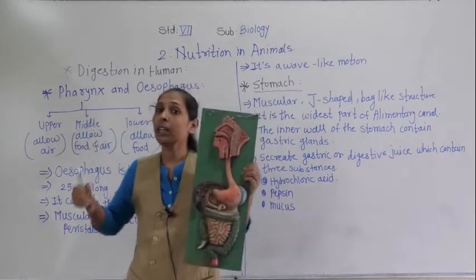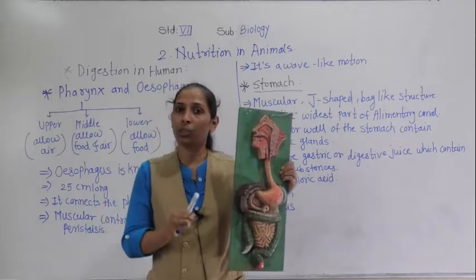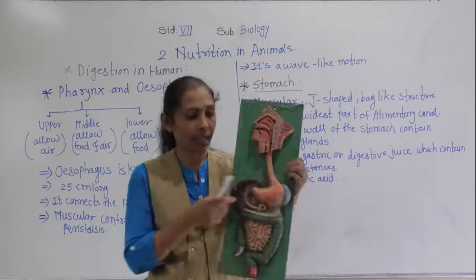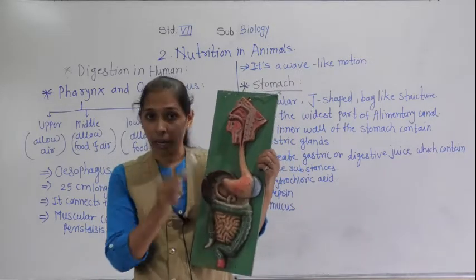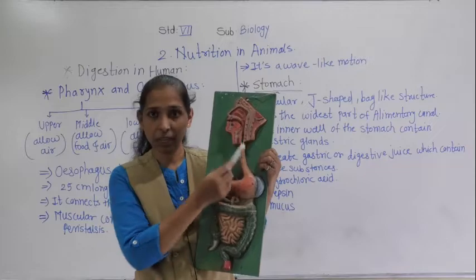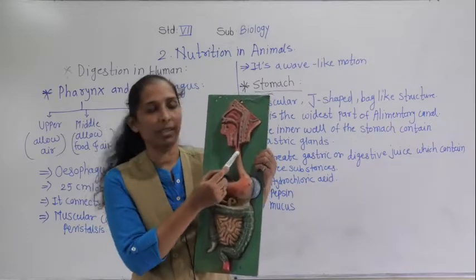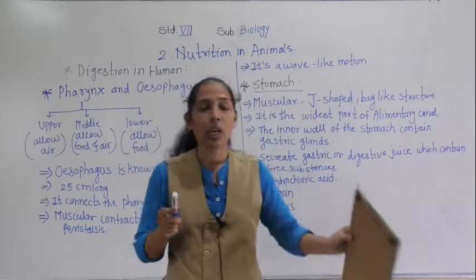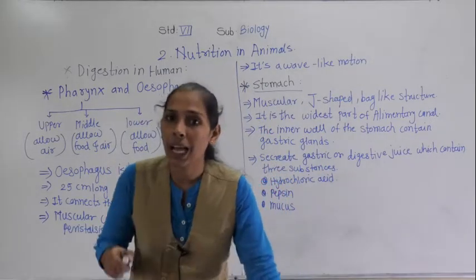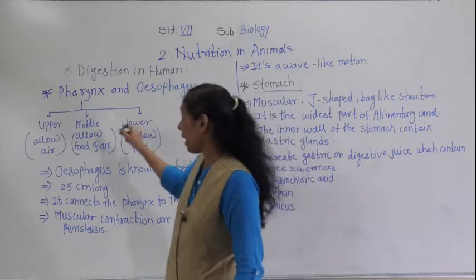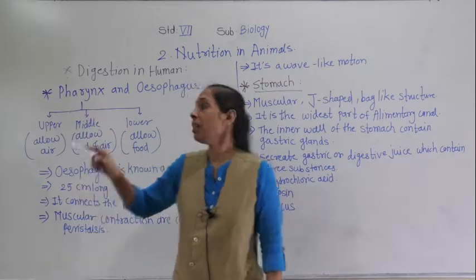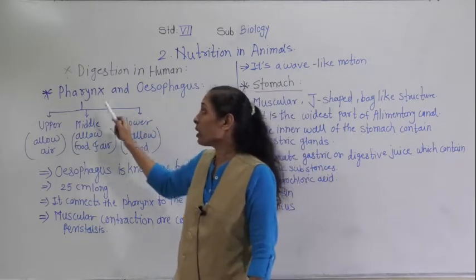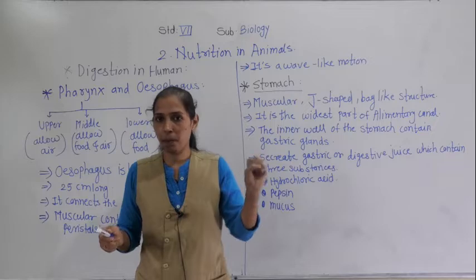The pharynx can transport air from the respiratory tract and also food and water from the digestive tract. In this way, the pharynx connects the esophagus with the stomach. The pharynx has three parts: the upper, middle, and lower parts.